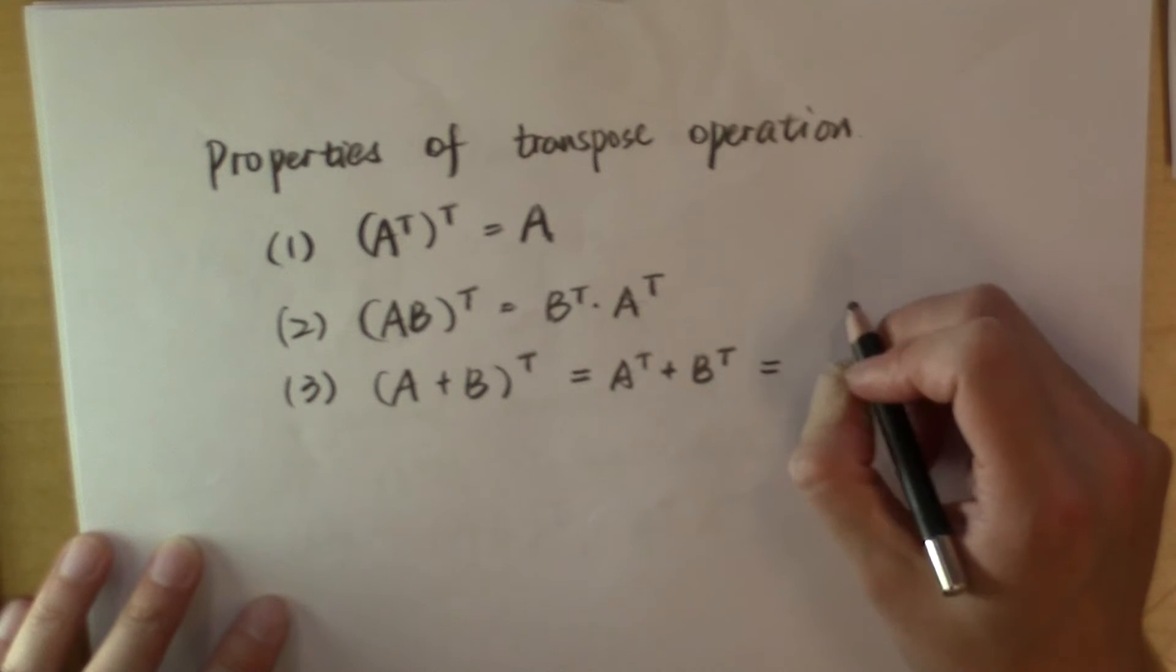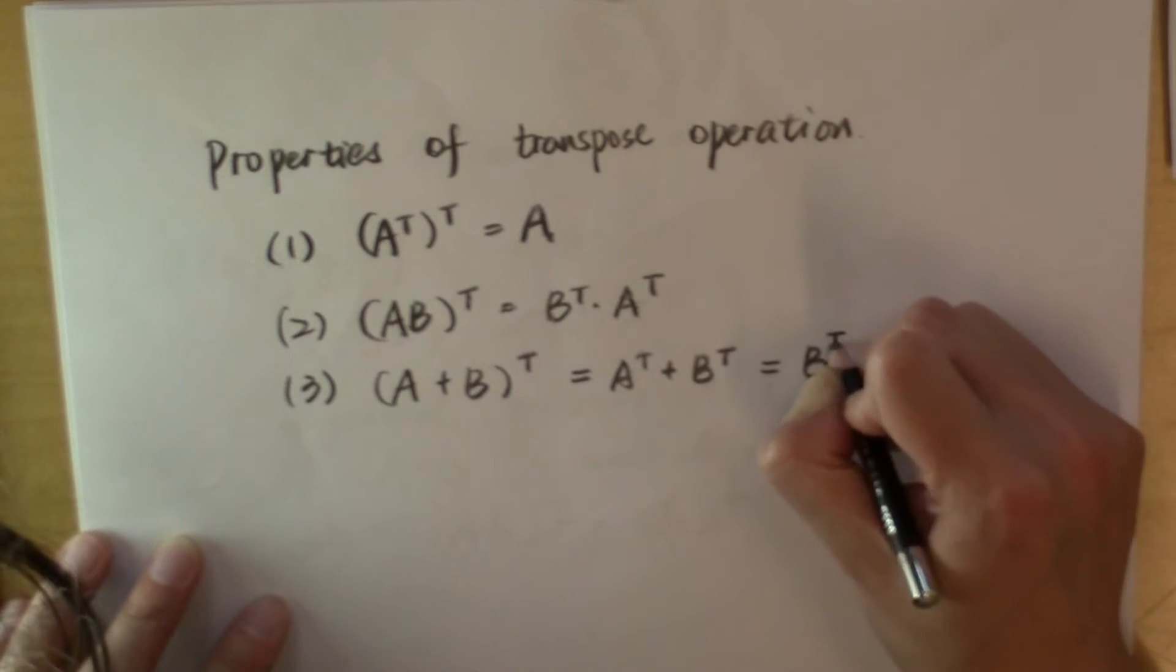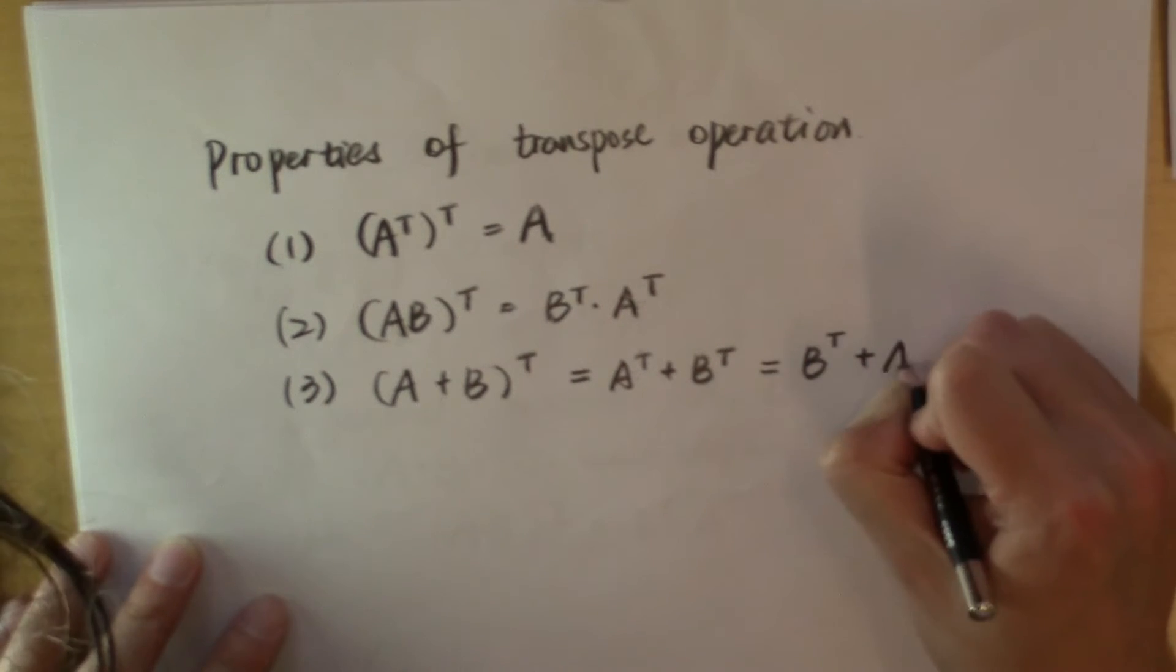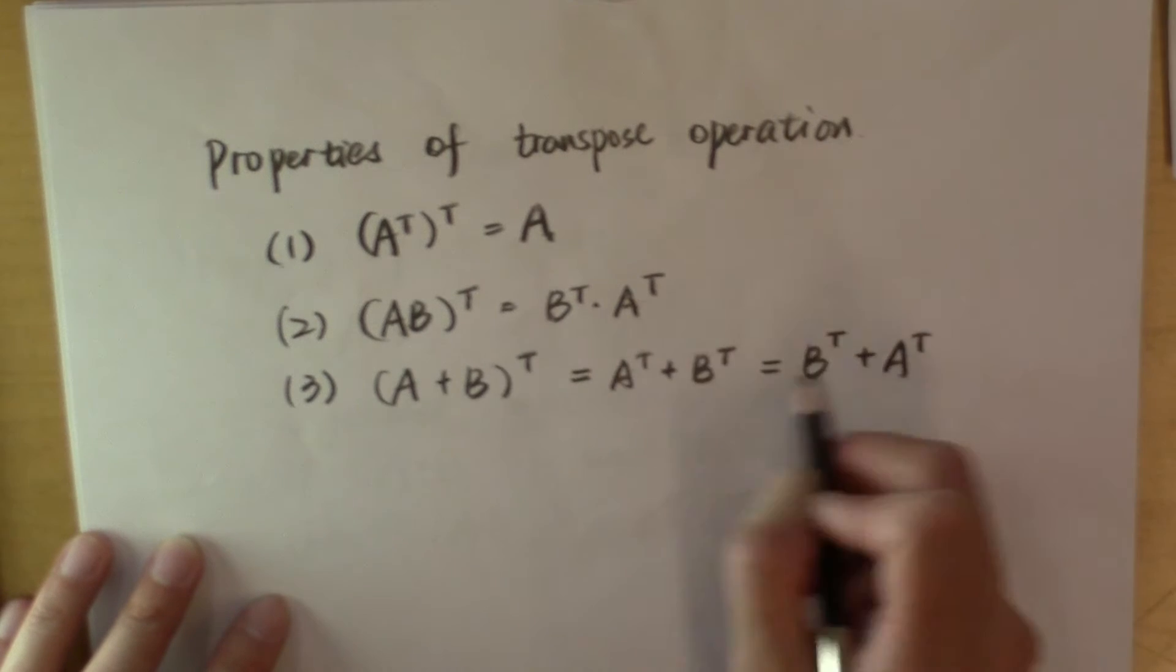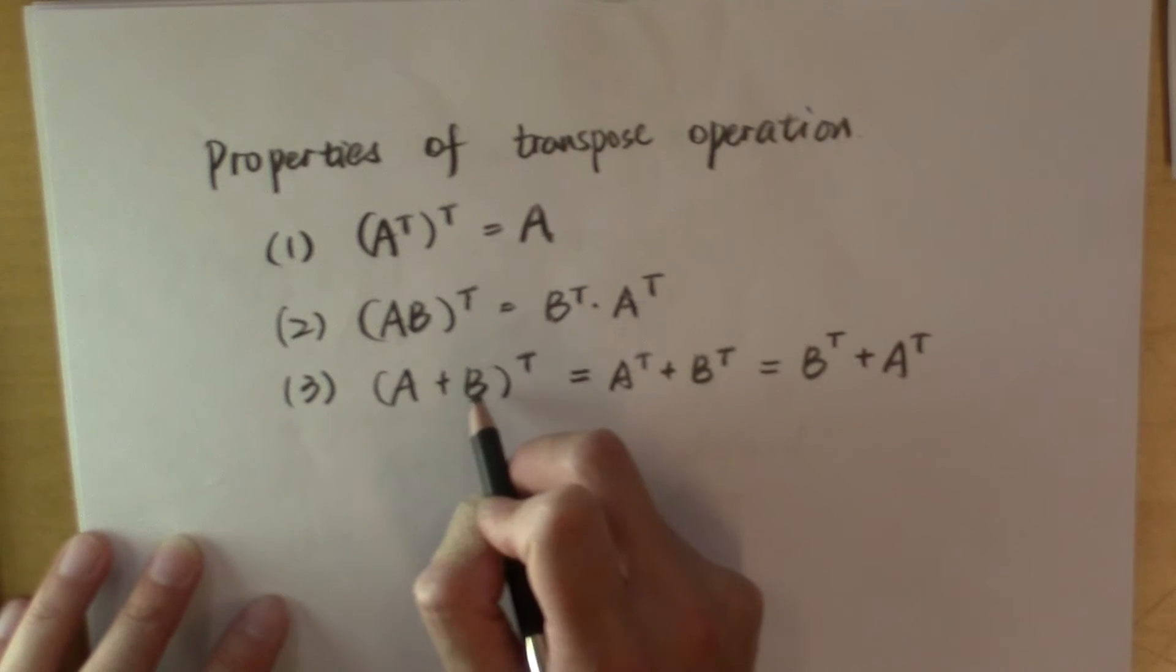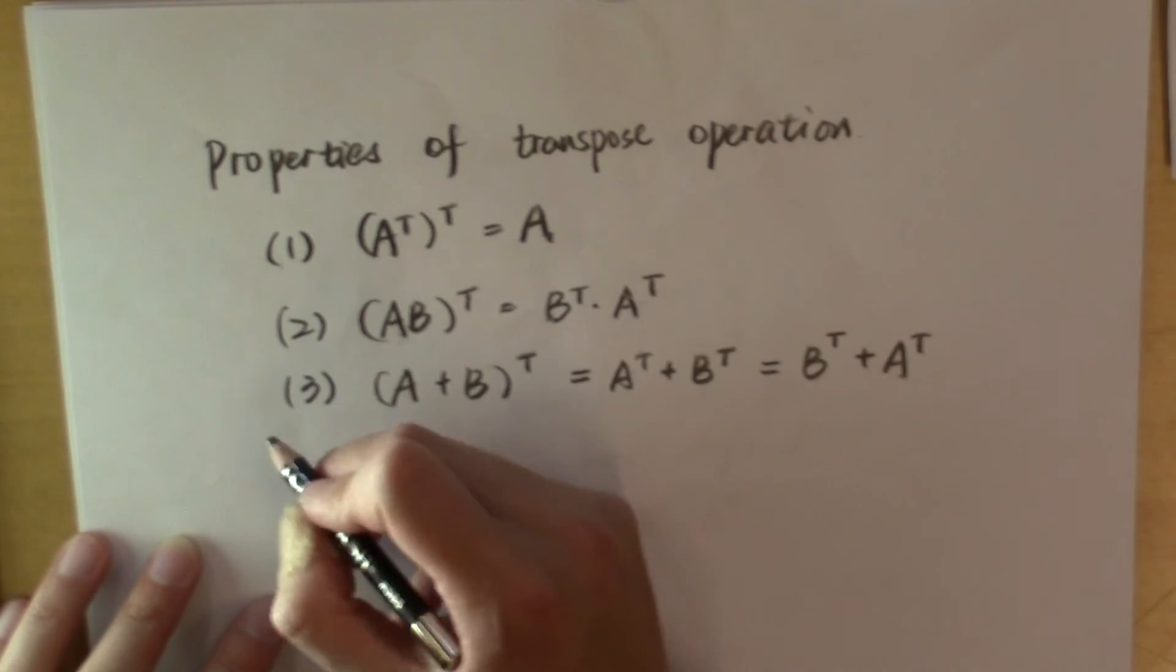And of course, because matrix addition is commutative, this is B transpose plus A transpose. And this is straightforward because matrix addition is entry-wise, and I'll leave it to you to verify this.